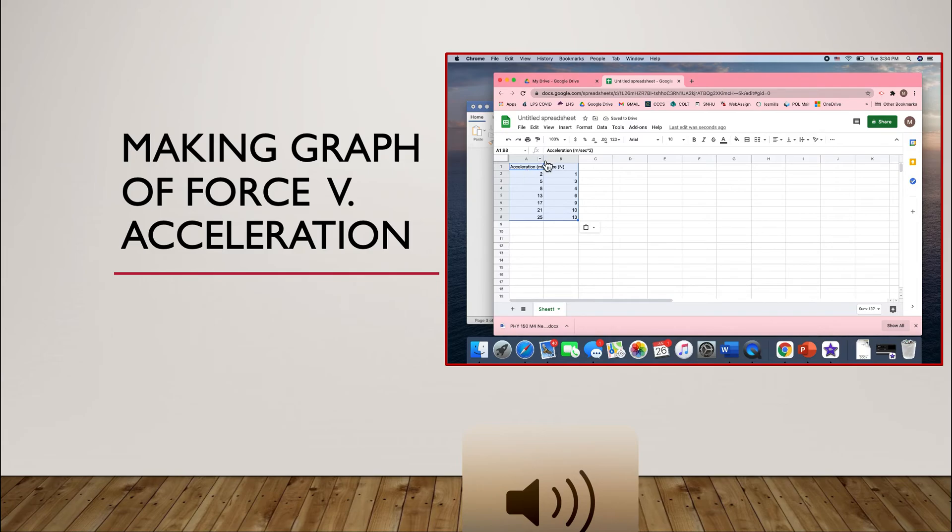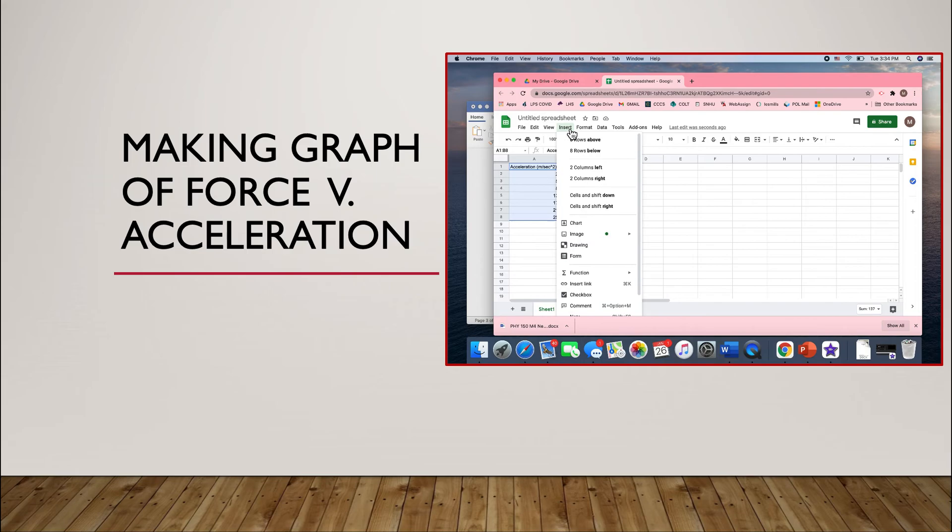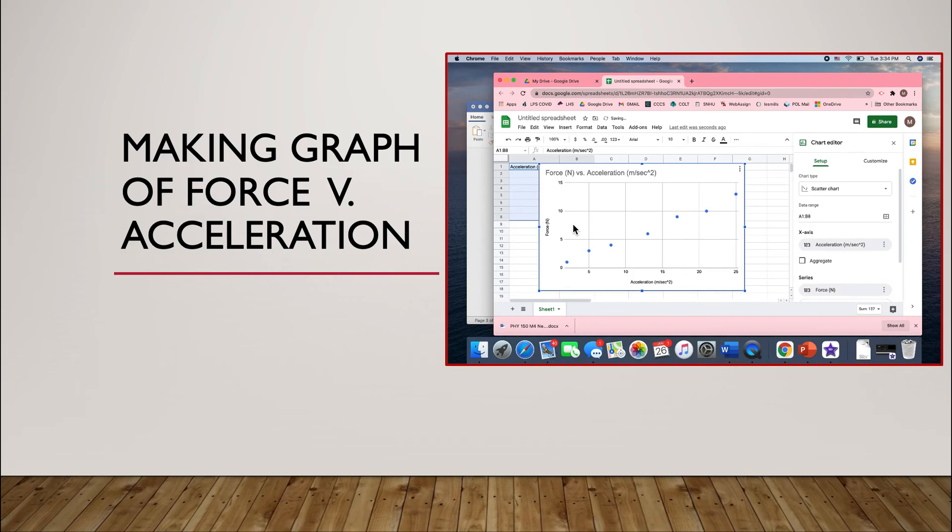Acceleration is in the first column because it's going on the x-axis. Force is in the second column because it's going on the y-axis. And you'll see I've included units in there too, because these column headers are going to become my axis labels when I'm all done. So all I have to do is make sure my data is highlighted. Go to insert, go down to chart. And there it is.